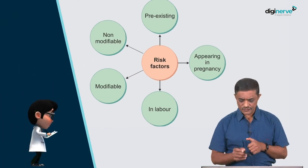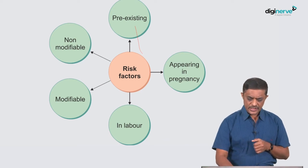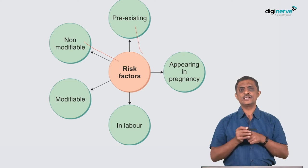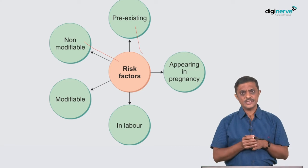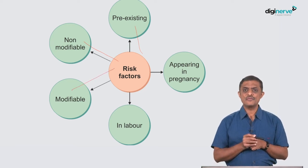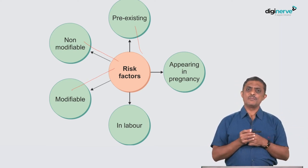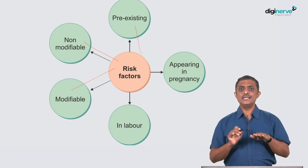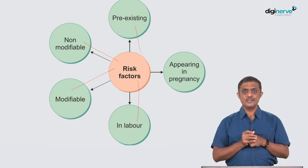When we talk about identification of risk factors, they could be pre-existing — for example, mitral stenosis, severe kyphosis of the spine, or a previous cesarean section. These are non-modifiable risk factors. Modifiable risk factors include diabetes mellitus or anemia — these can be treated preconceptionally or early in pregnancy to bring the patient into a favorable situation. Risk factors can also come up during labor, such as antepartum hemorrhage, obstructed labor, or threatened rupture of the uterus.